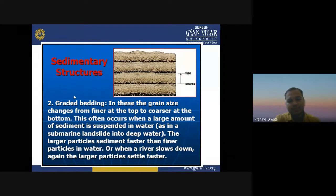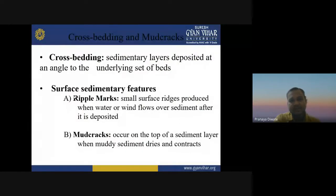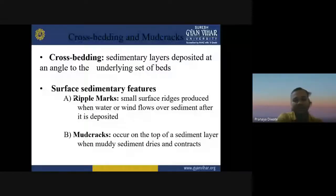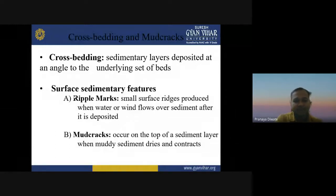Graded bedding goes from coarsening to fining — that is your graded bedding. Cross bedding forms when a river changes its path and sedimentary layers are deposited at an angle. Surface sedimentary features include ripple marks and mud cracks. Ripple marks are small surface ridges produced when water or wind flows over sediment.